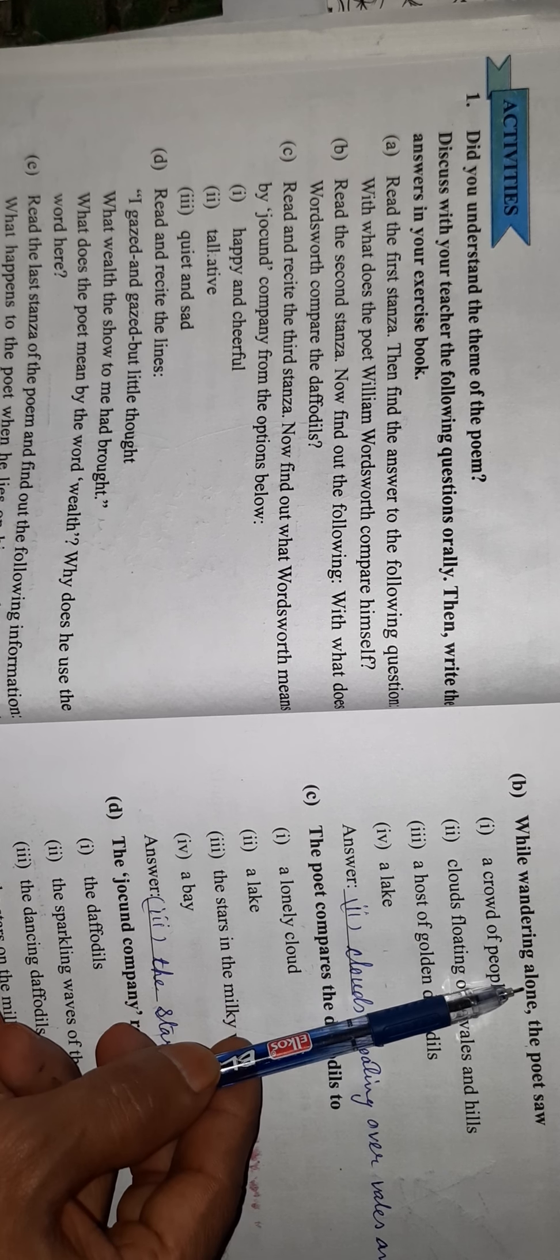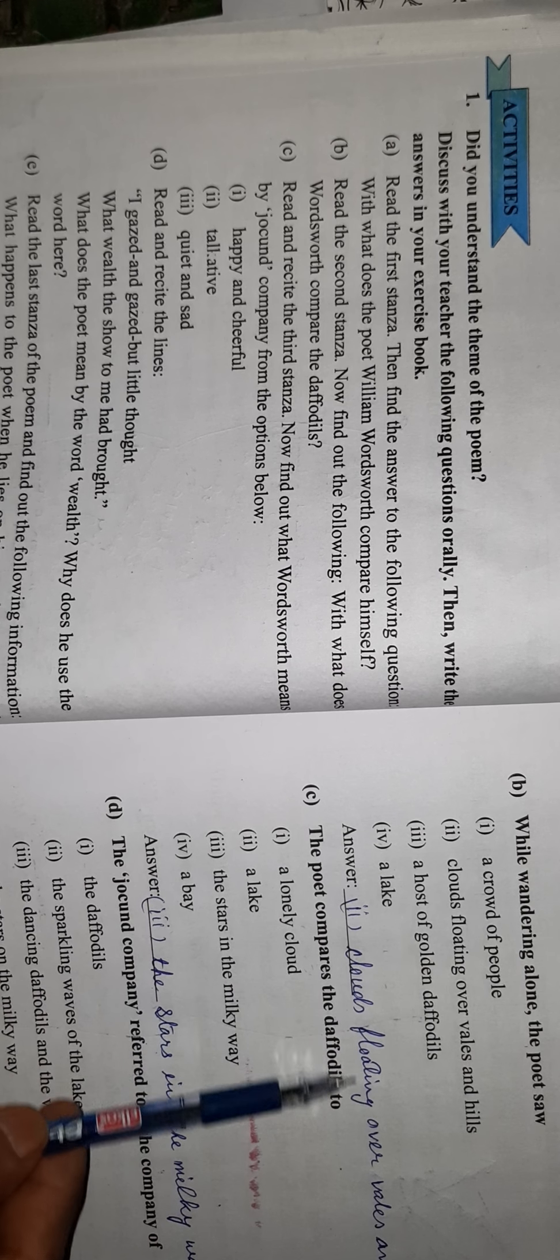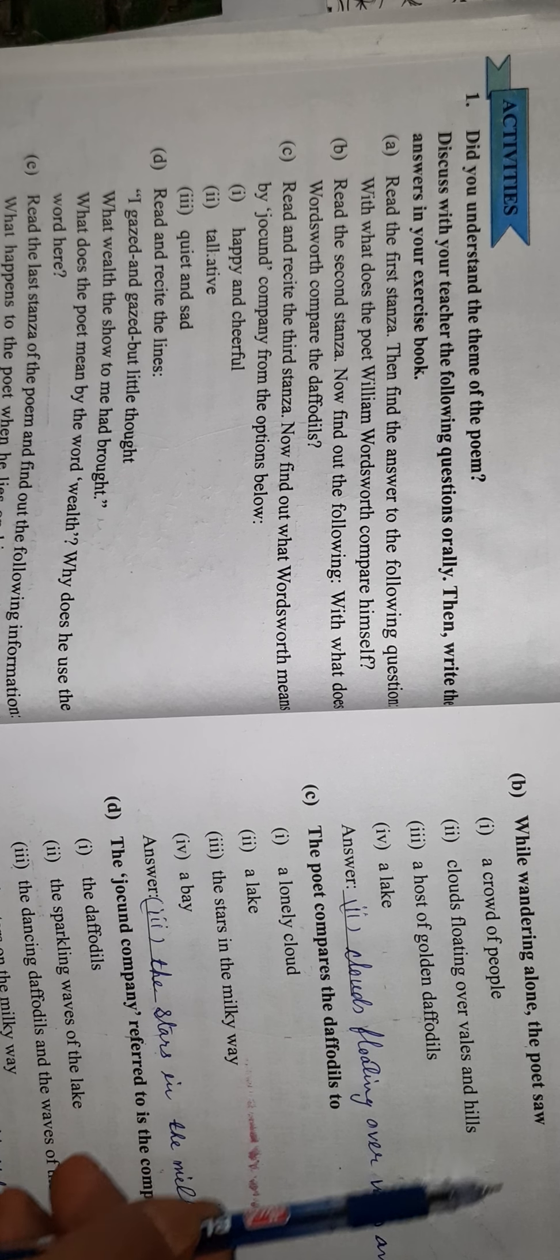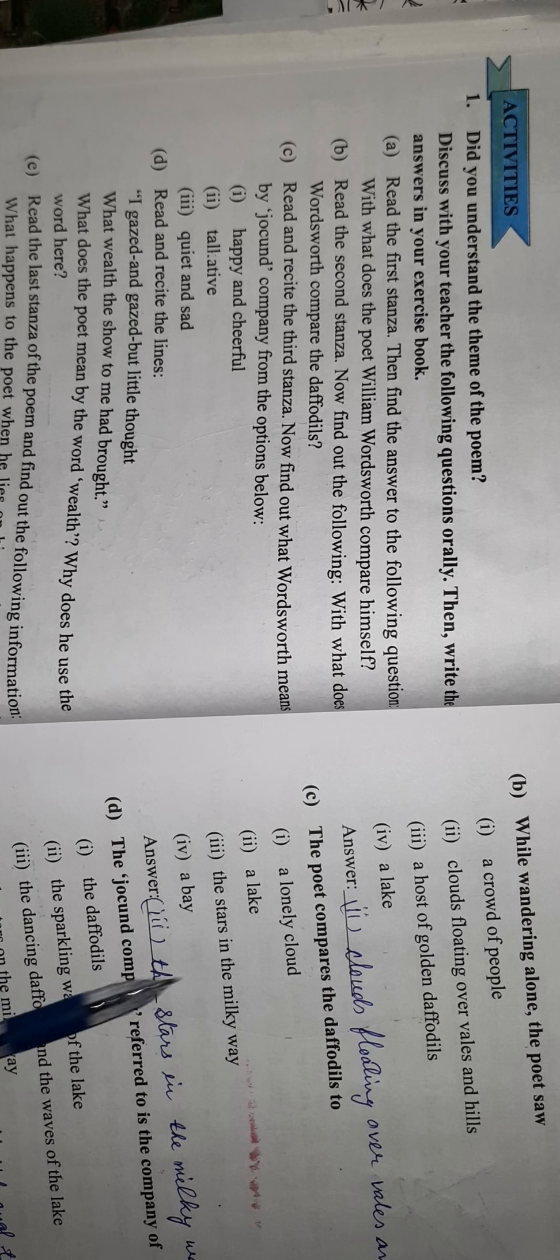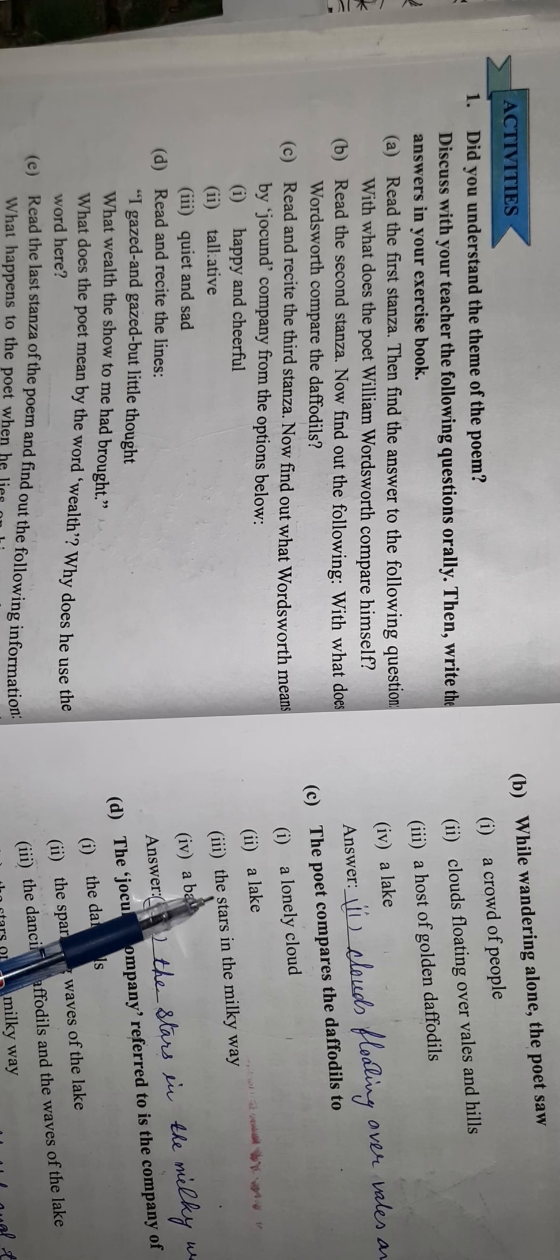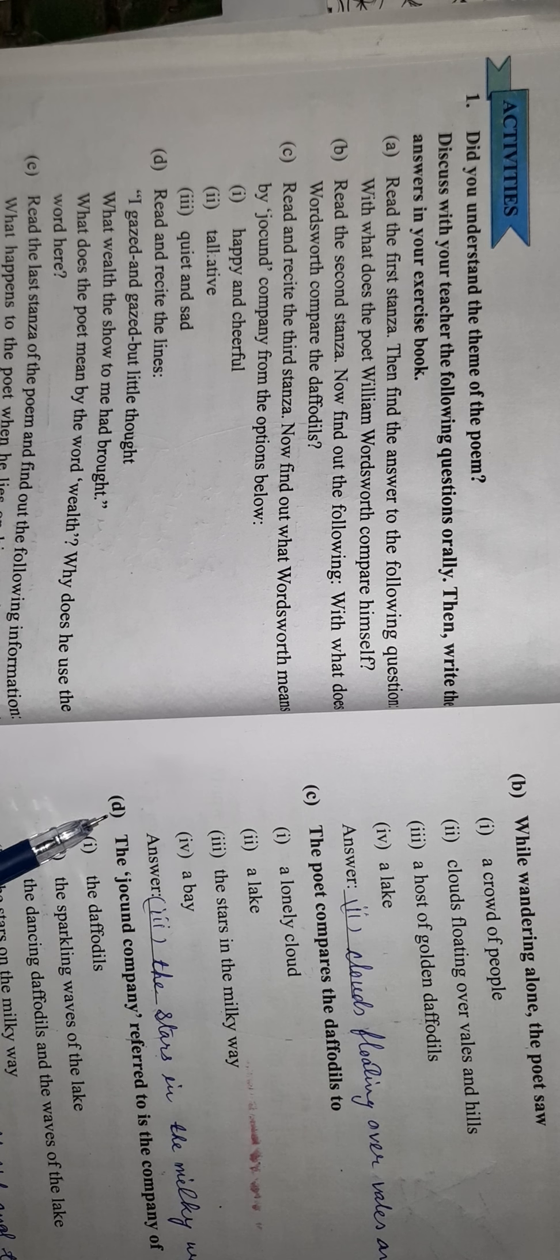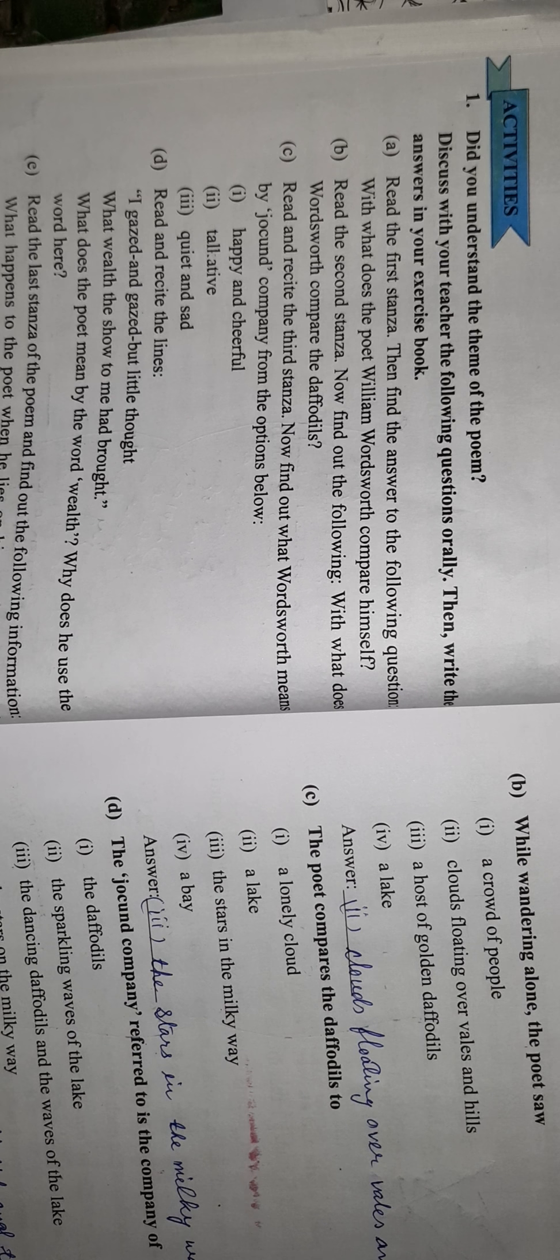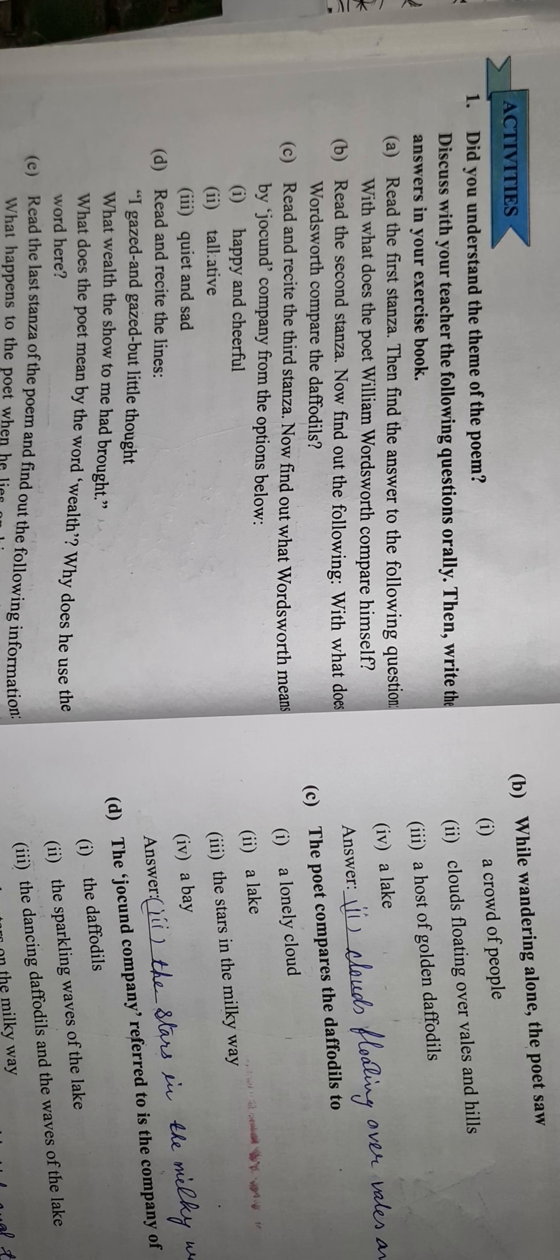While wandering alone, the poet saw clouds floating over valleys and hills. The first one compares the daffodils. This is the third one. The stars in the milky way. The second one is the company of the dancing daffodils and the waves of the lake.